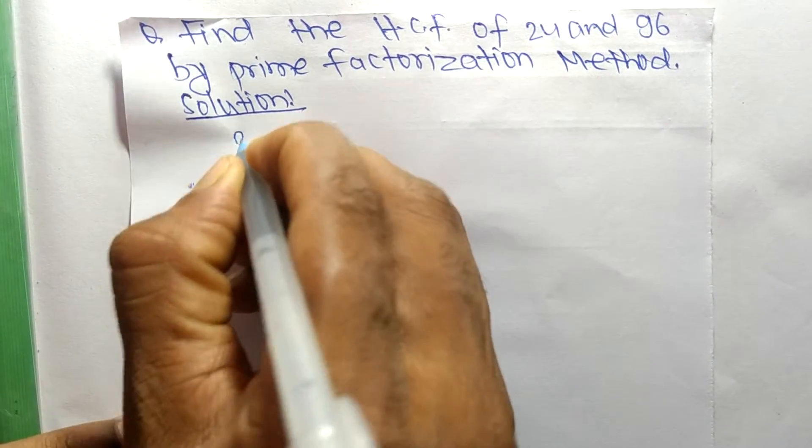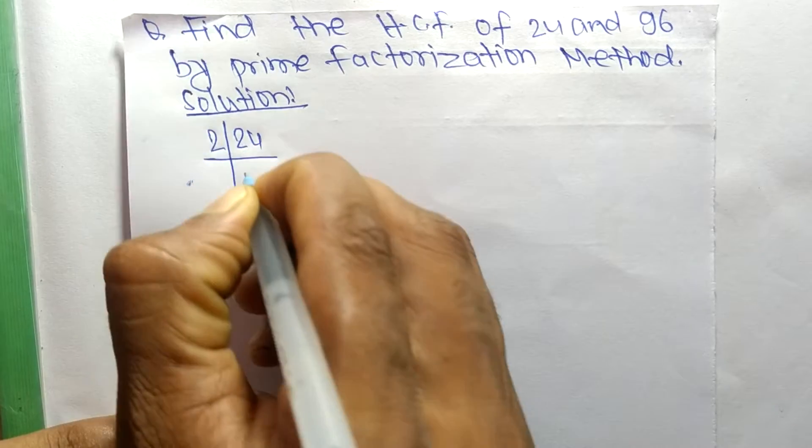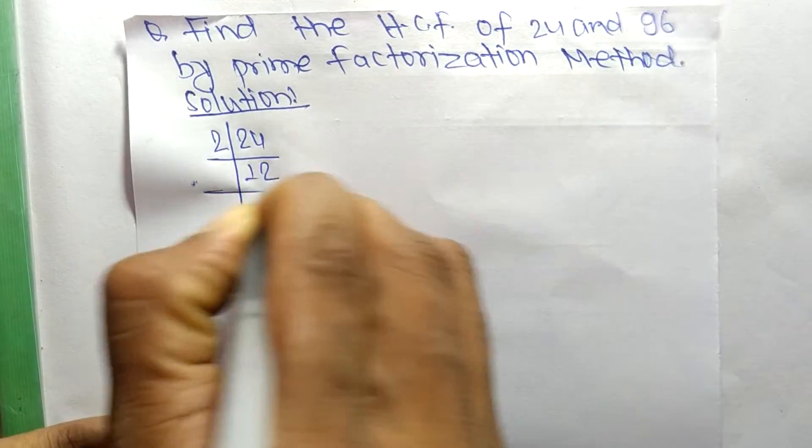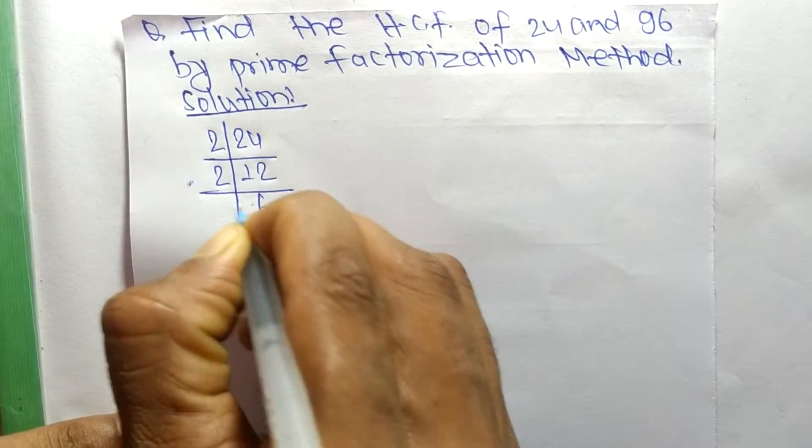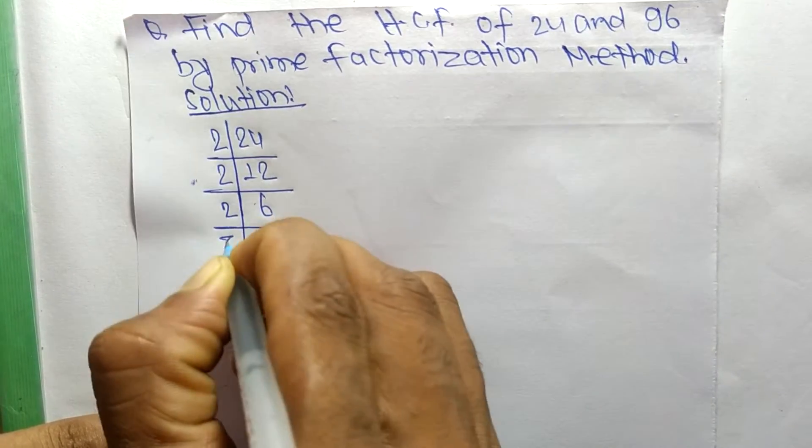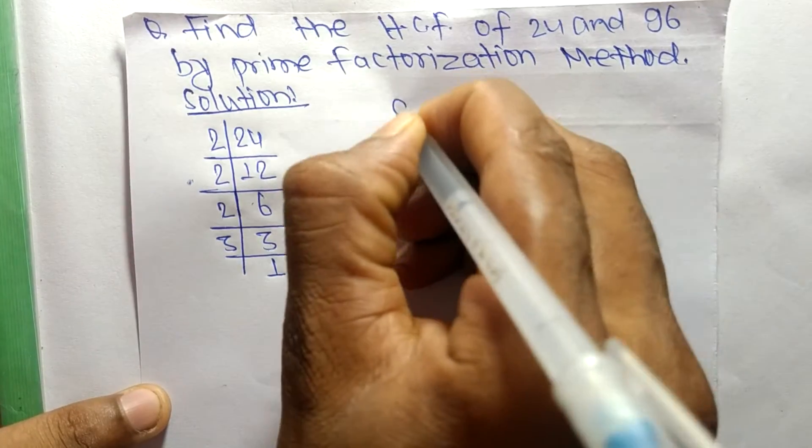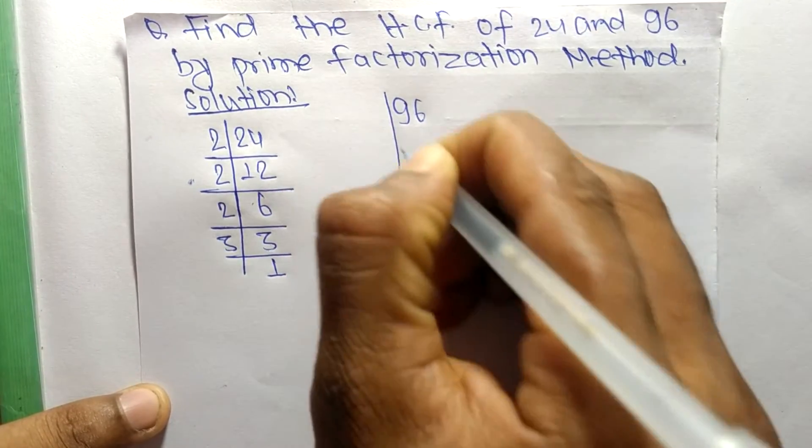First we find out the prime factors of 24. It is 2 times 12 equals 24, 2 times 6 equals 12, 2 times 3 equals 6, and 3 times 1 equals 3. Likewise, the prime factors of 96 are: